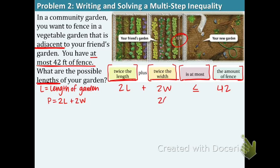Take a look at the 12 feet. That is the width of the garden. So we're going to plug that in for the W. 2W is 2 times 12. The rest comes down. We have 24, 2L plus 24 is less than or equal to 42.